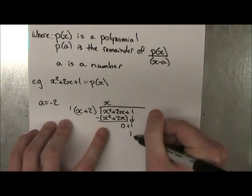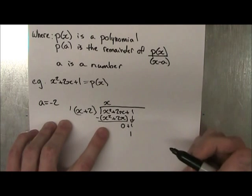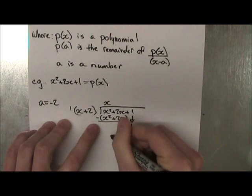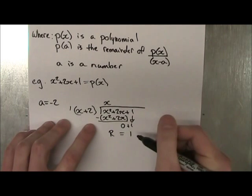And then you drop the 1 and you get plus 1, which gives us 1. How many times can x plus 2 go into 1? Well, it can't. So we know that our remainder, just like in the other question, is equal to 1.